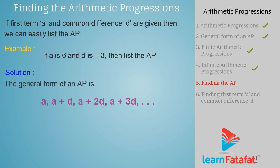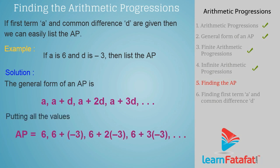Solution. The general form of an AP is A, A plus D, A plus 2D, A plus 3D, and so on. Putting all the values, we get AP equals 6, 3, 0, minus 3, and so on.